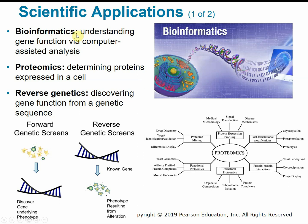Other up-and-coming scientific applications of biotechnology include bioinformatics — understanding gene function via computer-assisted analysis, essentially DNA in a digital format. Proteomics is the study of determining what proteins are expressed by a cell, how they're expressed, and how they're regulated. Reverse genetics is the science of discovering gene function from a gene sequence — the opposite of forward genetic screens, where you start with a phenotype and find the underlying gene. In reverse genetics, you find a gene and work backward to determine what its phenotype would be if altered.